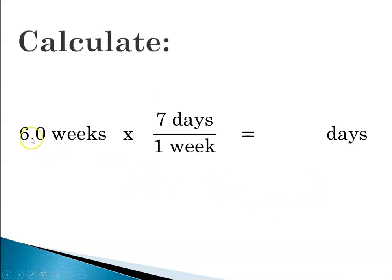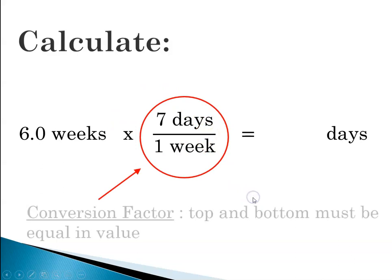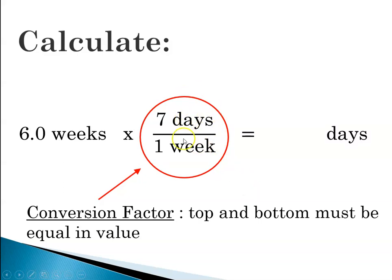Now for the calculation. Six weeks times seven days for every one week. So this is our conversion factor. And again, the conversion factor, seven days equals one week, and one week equals seven days. And so in your conversion factor, top and bottom must be equal in value. They're equivalent.